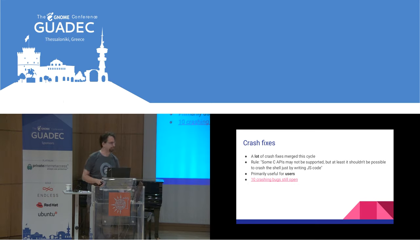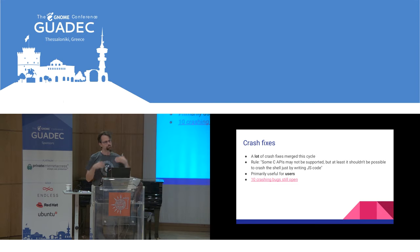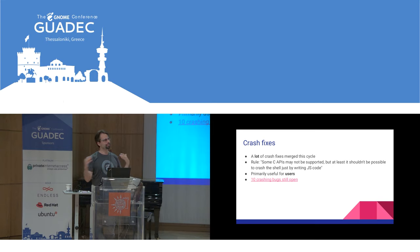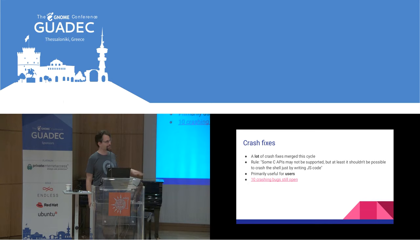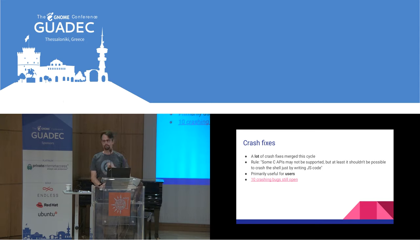Next, we have crash fixes. A big focus in the last two GNOME releases has been to close as many crashing bugs as possible. These have included contributions from many people. The general rule is: if you're writing JavaScript code for GNOME, you should not be able to crash the process — and in many cases, the process is the shell. You should not be able to crash the shell just by writing JavaScript code, even if a particular API isn't supported in JavaScript. There are still a few places where we fall short of that standard, linked in the presentation.